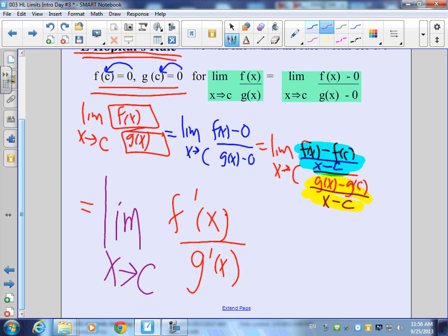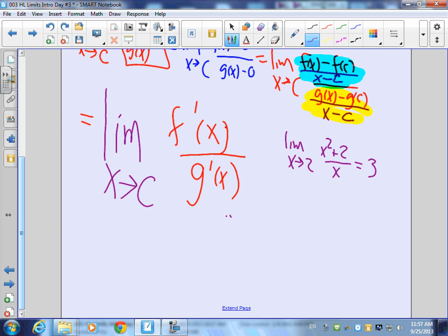Now just to kind of remind you of this, what's the limit as x approaches 2 of x squared plus 2 over x? What is that? 6 over 2, which is 3, right? Now let's say we blindly did L'Hopital's rule for this. We rewrote this as derivative of the top was 2x, derivative of the bottom is 1. I put in a 2 here, I get 4. What did I do wrong? The limit is supposed to be 3, and I got 4. What did I do wrong? Subtle. This can't be used because this is not an indeterminate form. It only works if it's an indeterminate form.